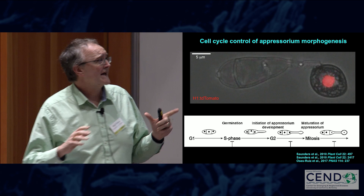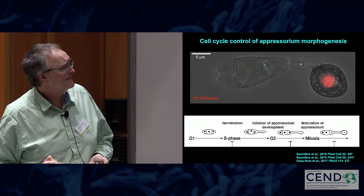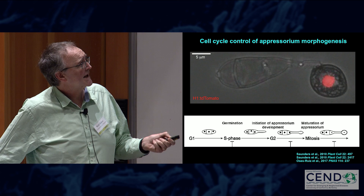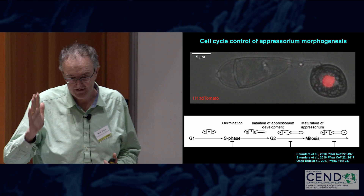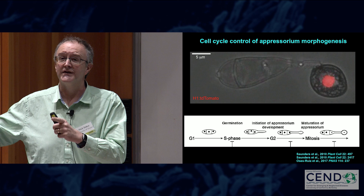There are a series of cell cycle checkpoints: an S-phase checkpoint and a DNA replication checkpoint which determine the initial swelling of the cell. The appressorium won't become fully differentiated until the nucleus has passed from G2 into M — it has actually undergone mitosis — and mitotic exit is actually important for appressorium maturation. Indeed, there's a second S-phase checkpoint that's important subsequently for repolarization.